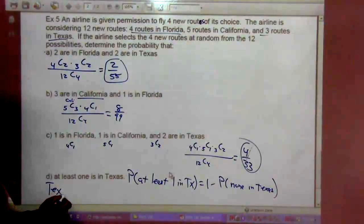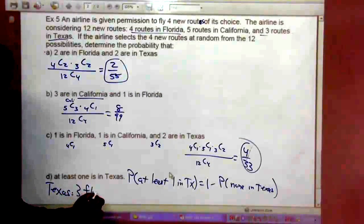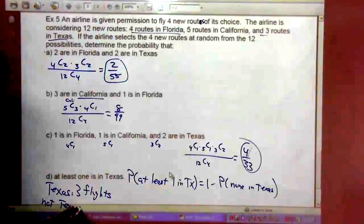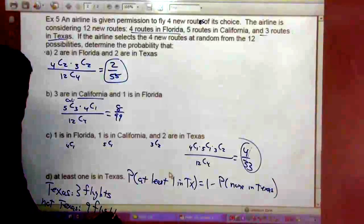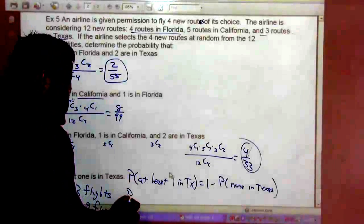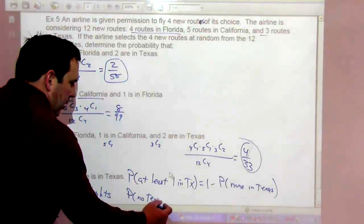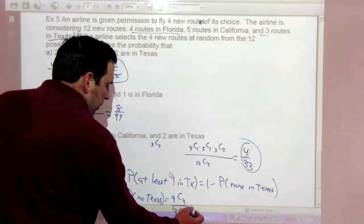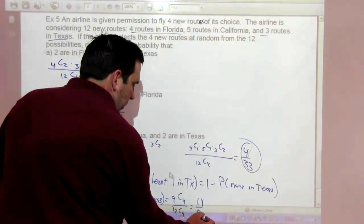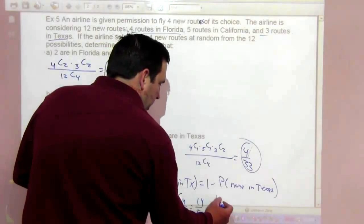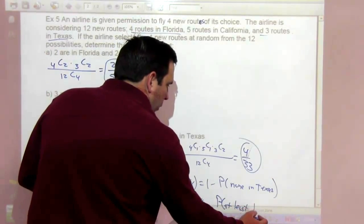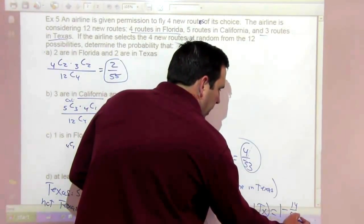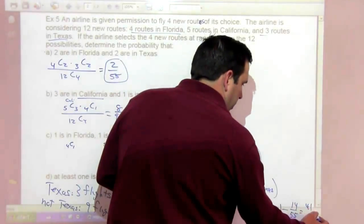So Texas has 3 flights. Non-Texas or not Texas would be 9 flights. So what we're looking at here is the probability of no Texas is 9 choose 4 over 12 choose 4. That's 14 over 55. So the probability of at least 1 Texas is going to be 1 minus 14 over 55, which is 41 over 55.